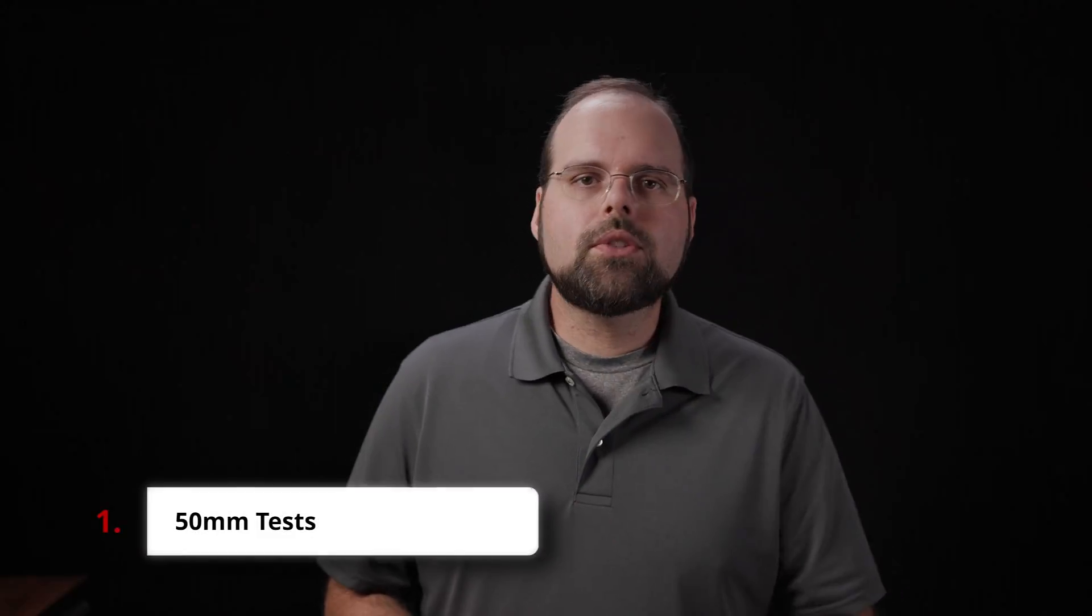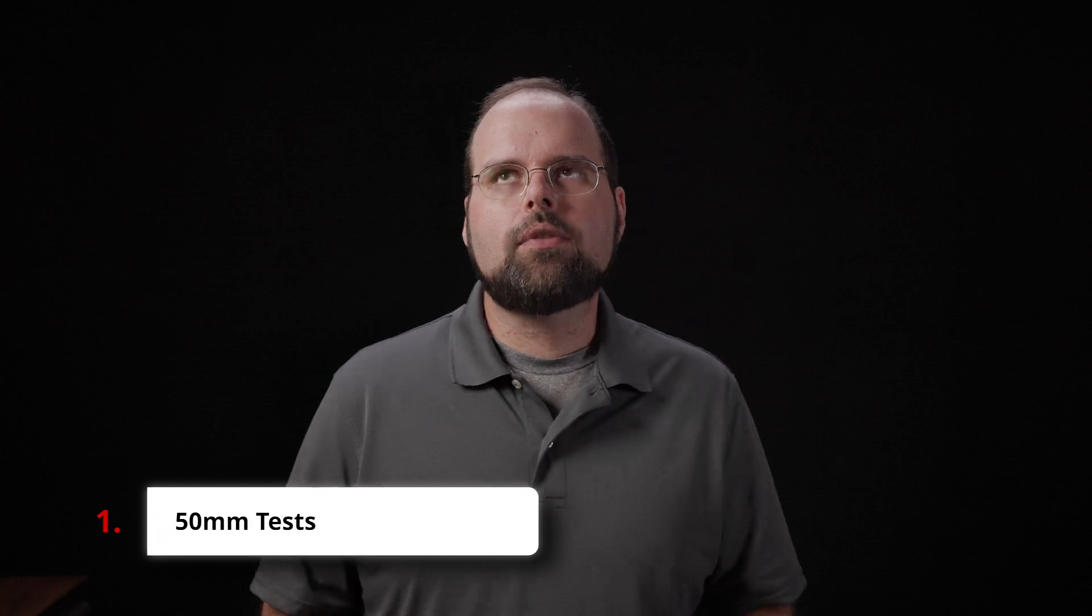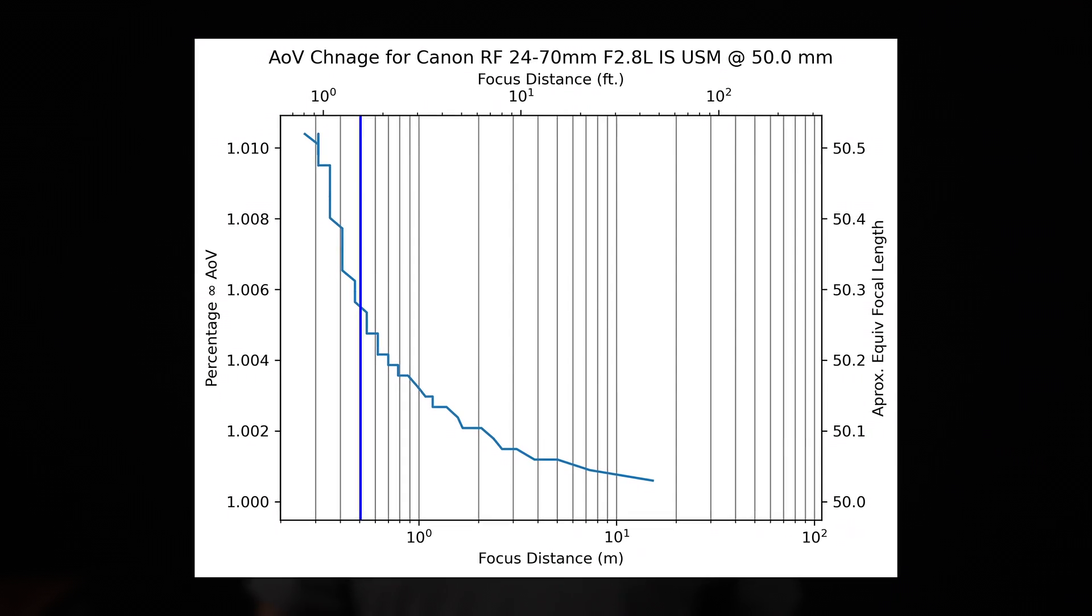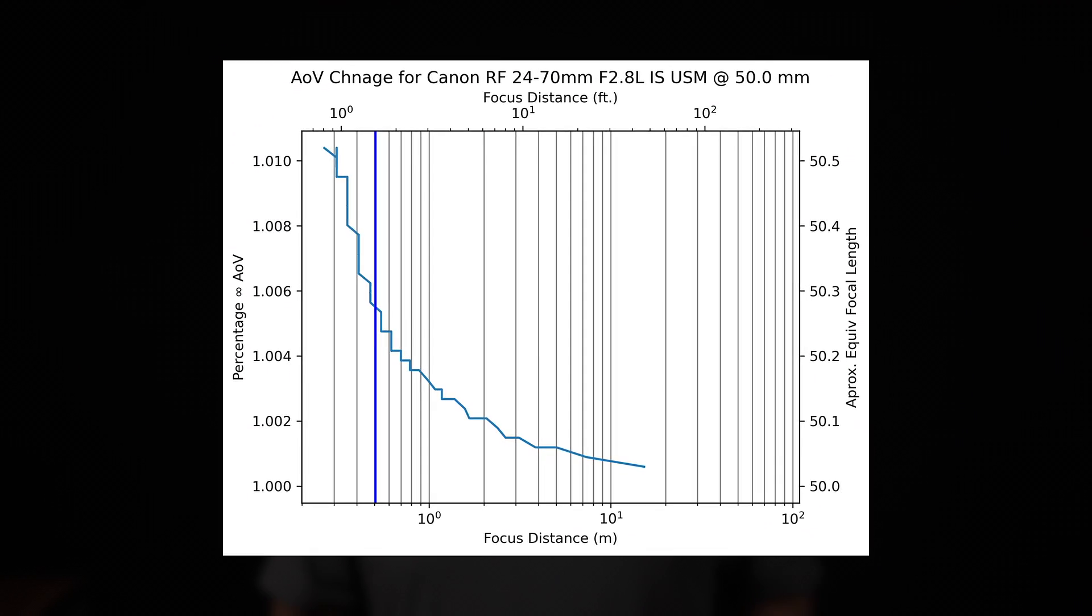At 50 millimeters, the total amount of focus shift, or focal shift, is about 1% narrower. So we've changed directions going from wider to narrower. This means that at the minimum focus distance, the lens will have an angle of view equivalent to approximately a 50.5 millimeter lens. And again, like the 35 millimeter position, we're talking about less than 1% change over the entire focal range.